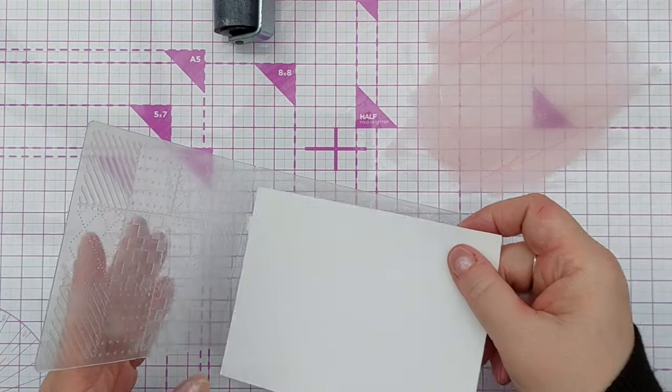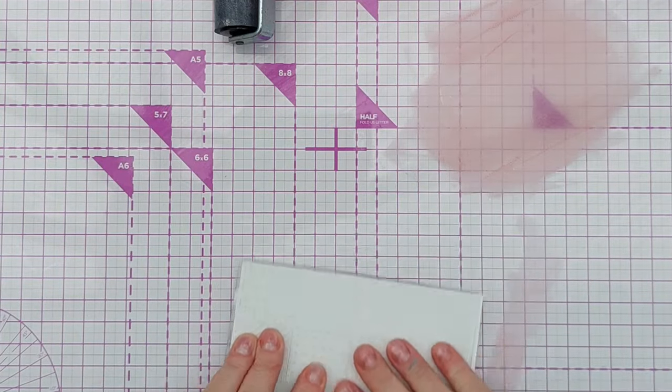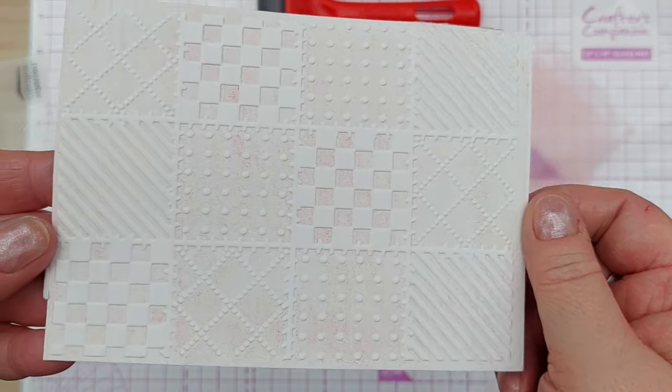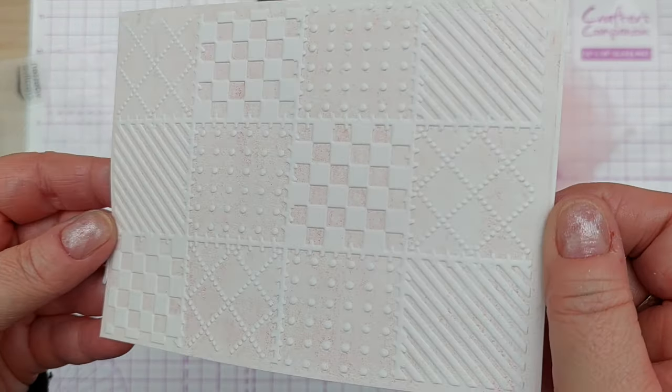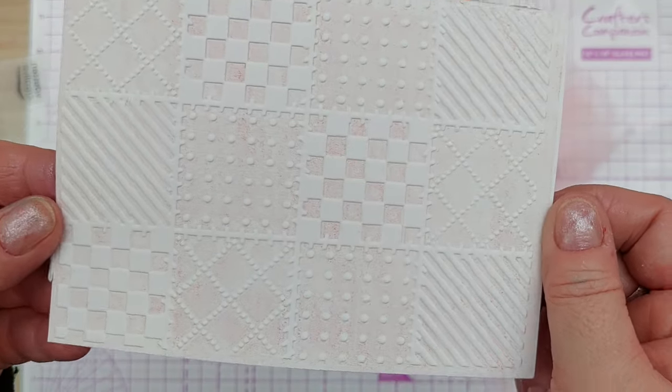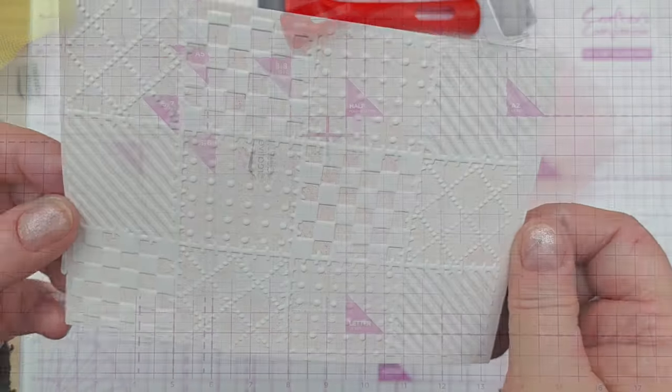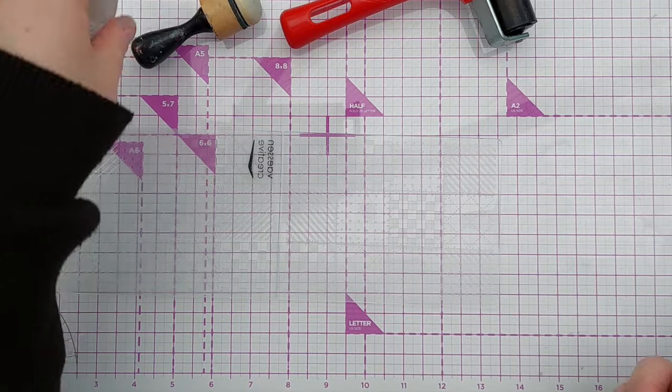Pop a bit of paper in there, run that through the die cutting machine. And there we have a beautiful pink and shimmery embossed image. It's a lot cleaner than using the spray.